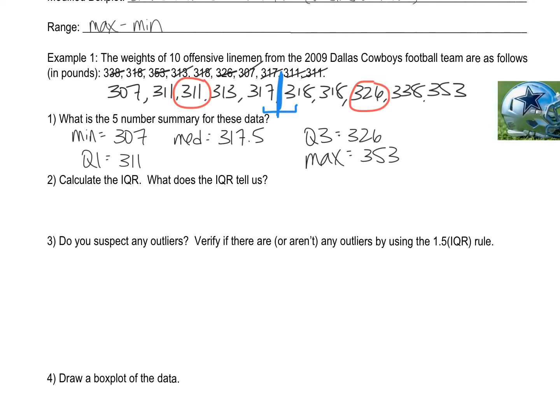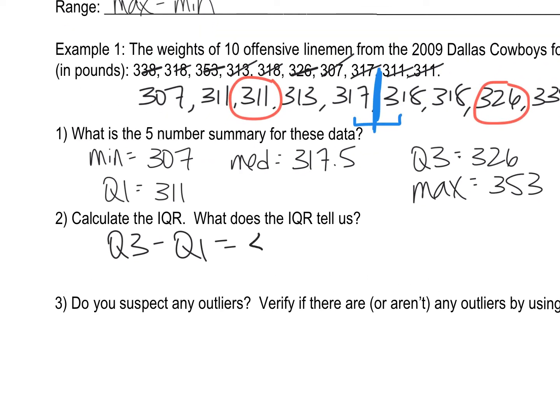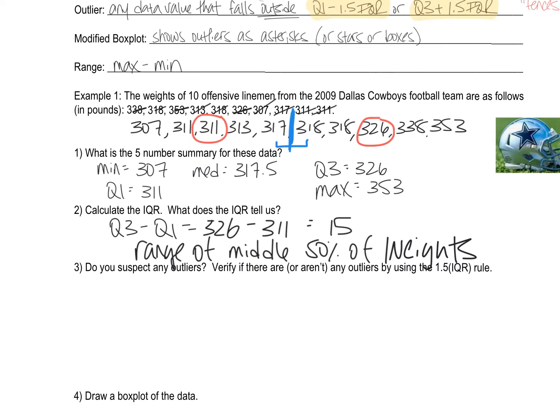And so the next question says calculate the IQR. And what does it tell us? So the IQR is represented by Q3 minus Q1. So it's just a very simple formula to do. Q3 minus Q1 is going to be 326 minus 311, which gives us 15. That's my IQR. This represents the range of the middle 50% of linemen's weights. So what that means is my 50% of the guys in the middle of the pack of linemen are within 15 pounds of each other. So that's the middle 50% of the data, which is in between 326 and 311. That range is 15.